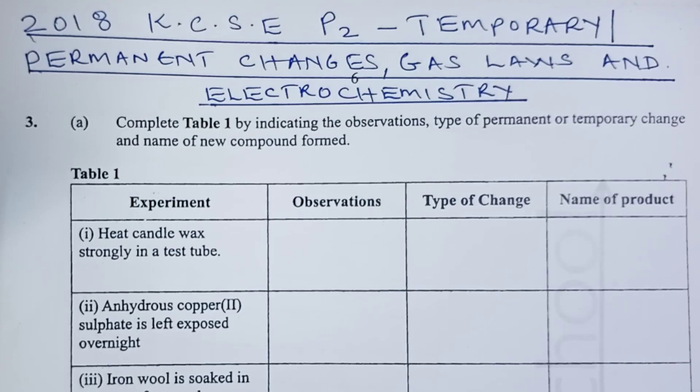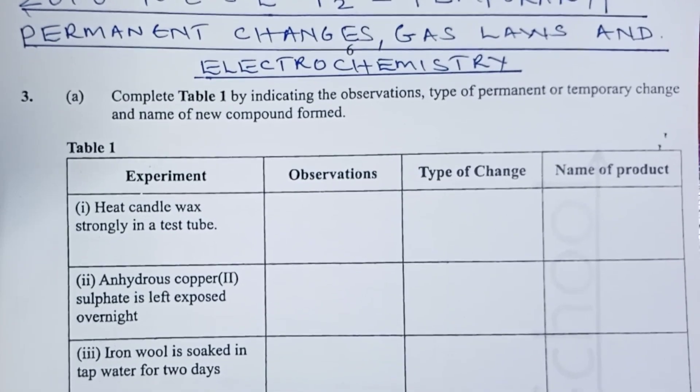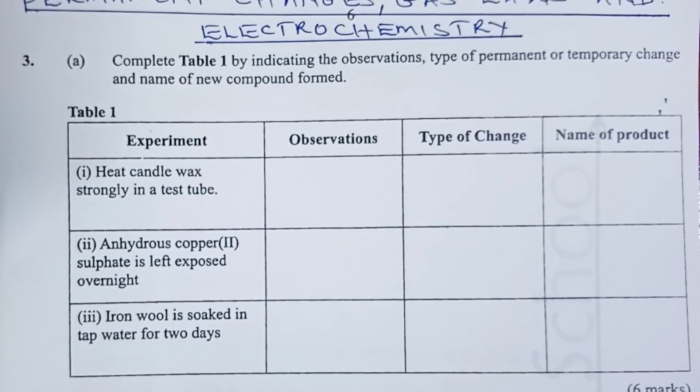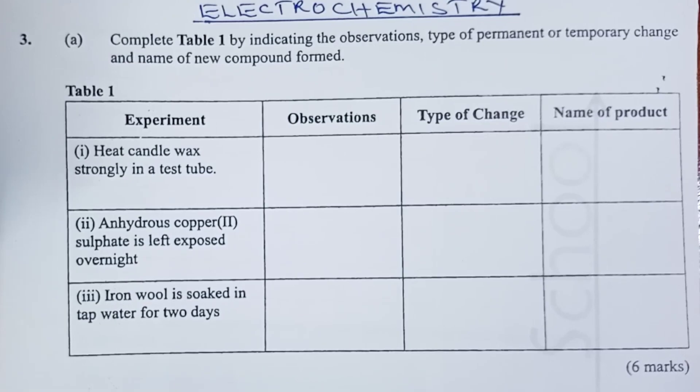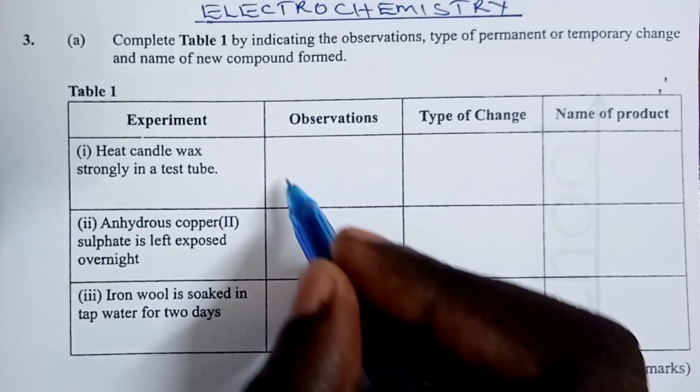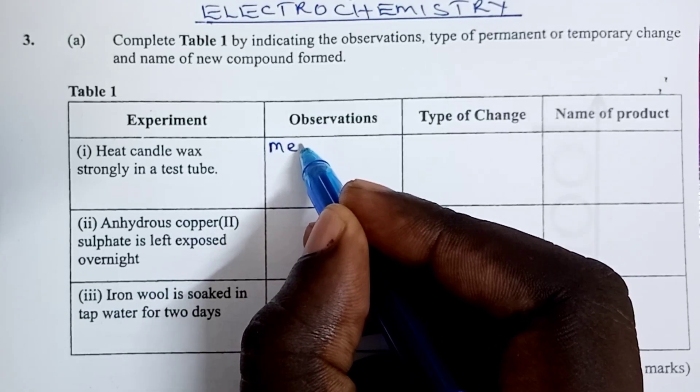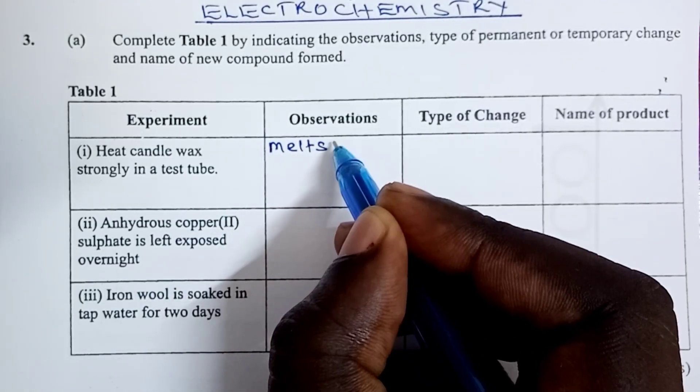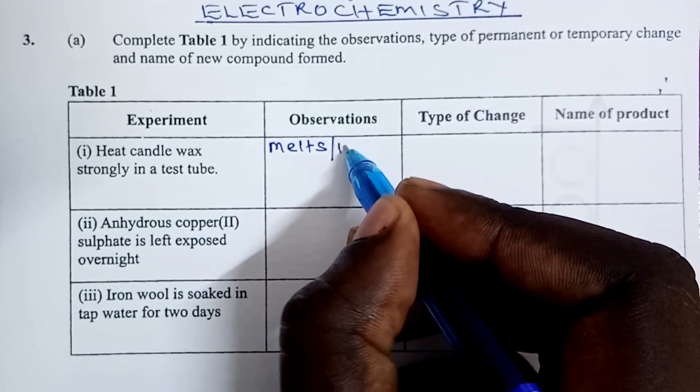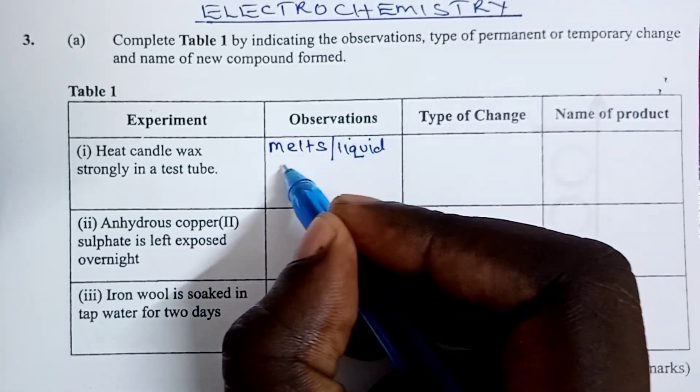Part A. Complete Table 1 by indicating the observations, type of permanent or temporary change, and name of new product formed. Our first experiment involved heating candle wax strongly in a test tube. The observation would be that the candle wax melts or a student had the option of telling us that liquid is formed.